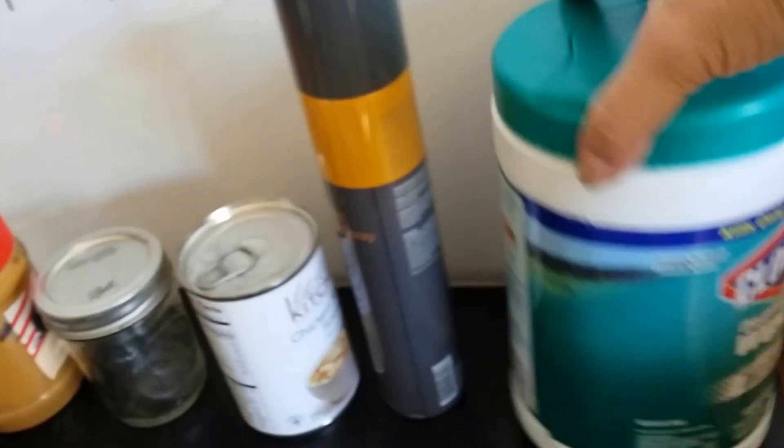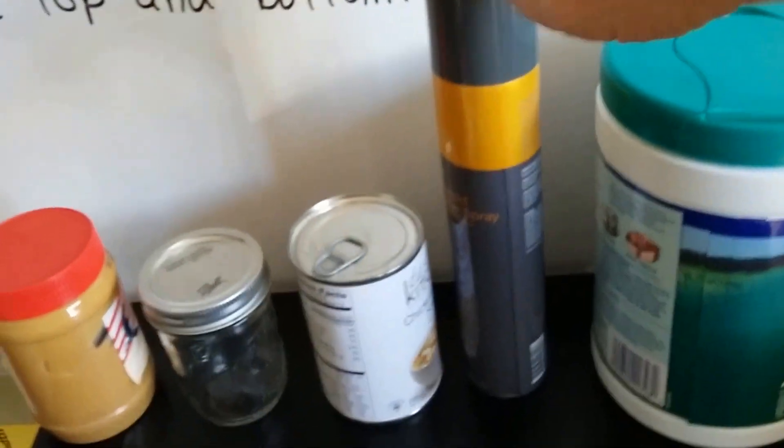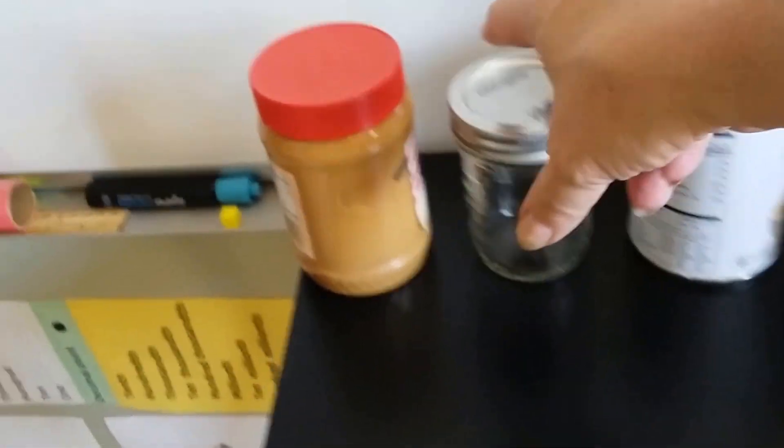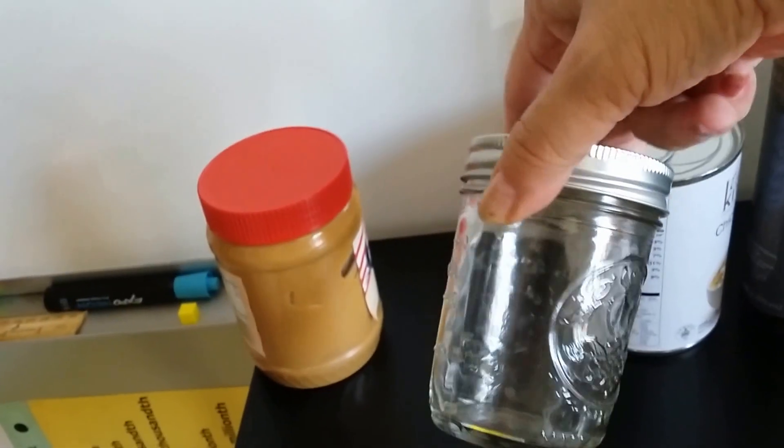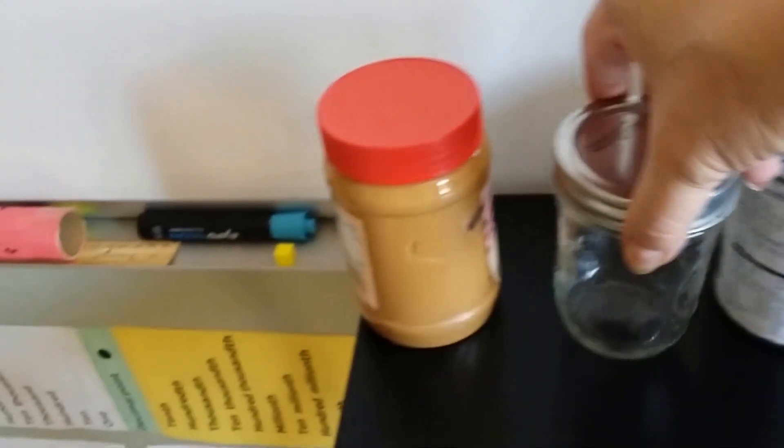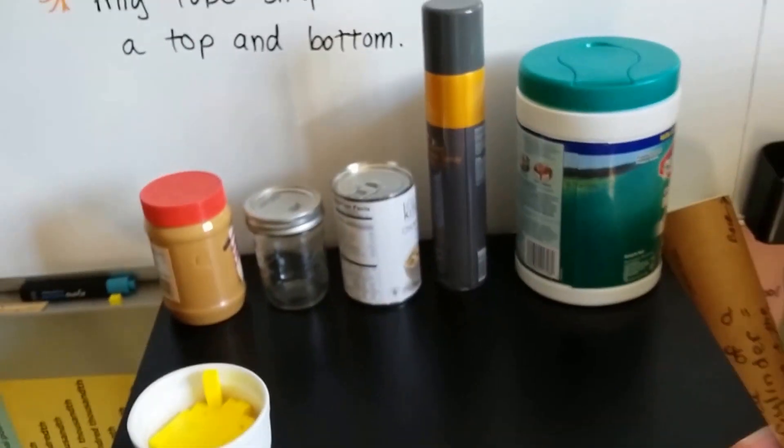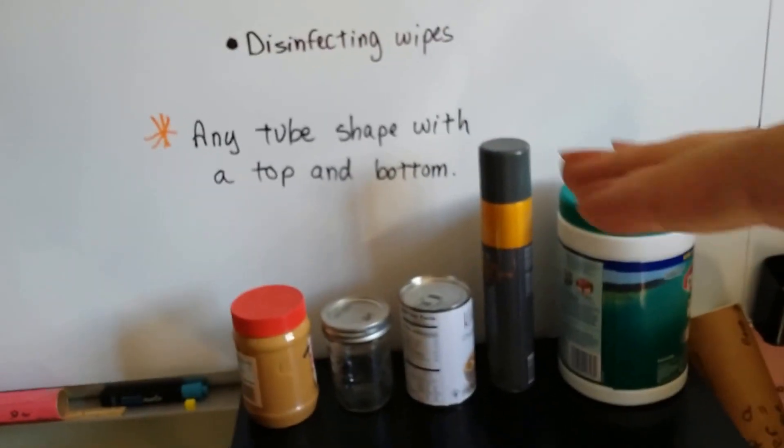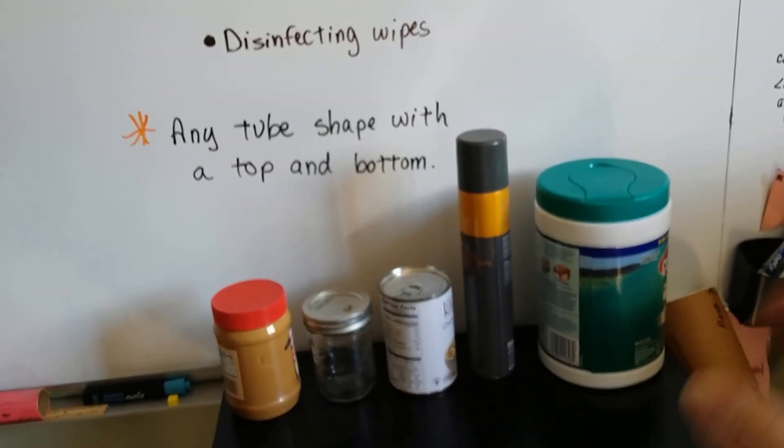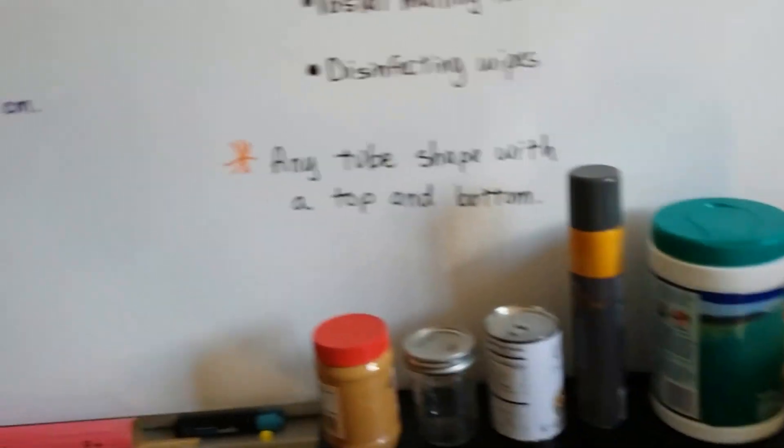Look it. I've got a container of disinfecting wipes. I've got a can of hairspray, a can of soup. I've got a jar that I could put jam in or something. That's a cylinder. Even my container of peanut butter. Those are all cylinders and we can find the volume of those. They have a base on the top and a base on the bottom. And then it's like a tube going around.